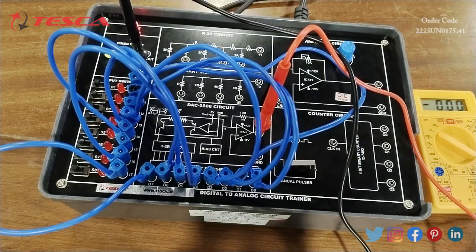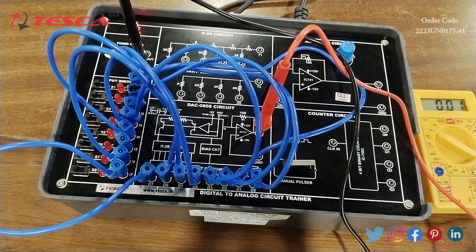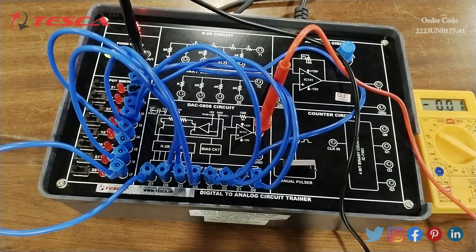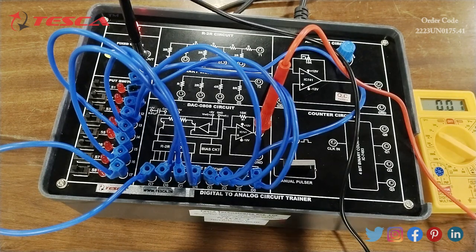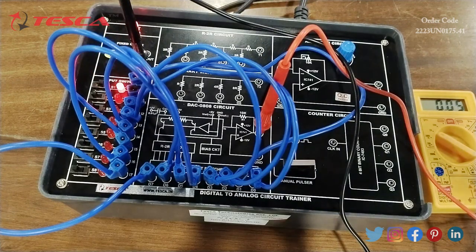Now I will observe the output at T6 on a multimeter. Now one by one, I will turn on the switches and will get the output on the multimeter. First, I will start the switch S1.